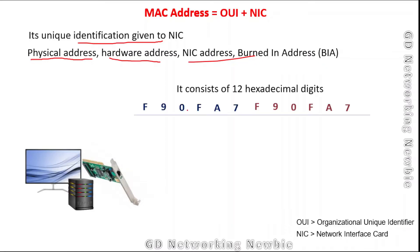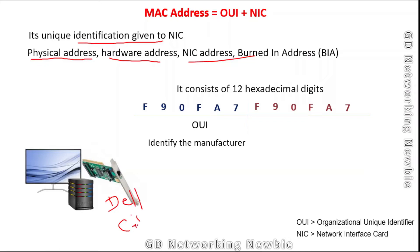The MAC address, or physical address, consists of 12 hexadecimal digits. The first six hexadecimal digits represent the OUI — Organizational Unique Identifier — and they are used to identify the manufacturer of the network interface card, such as Dell or Cisco. The remaining six hexadecimal digits are assigned by that particular manufacturer to the specific network interface card.